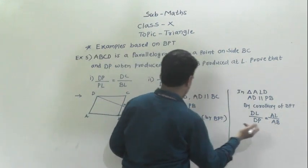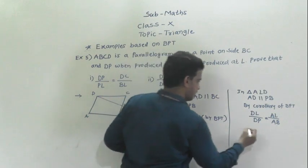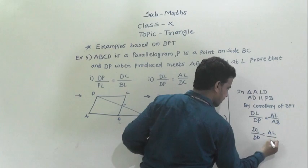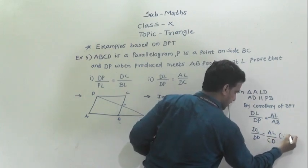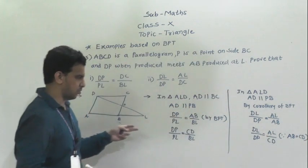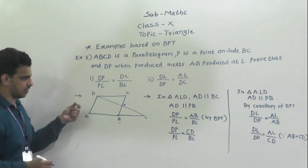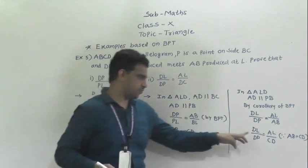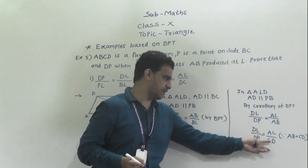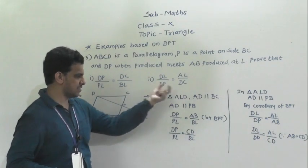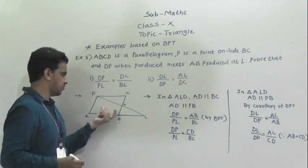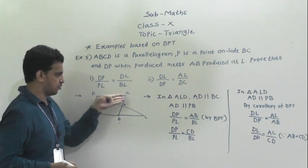Since AB and CD are opposite sides of the parallelogram and are equal, we can replace AB with CD. So DL by DP is equal to AL by DC. This completes the second proof. In this example, the parallelogram property that opposite sides are equal was used together with BPT.